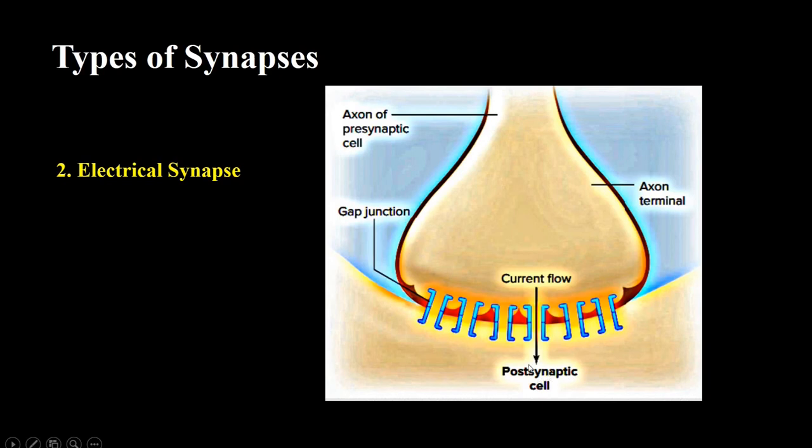The gap between electrical synapses is much smaller than that of the gap present in chemical synapses, which is about 3.5 nanometers compared to 20 nanometers of chemical synapses.